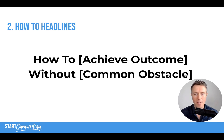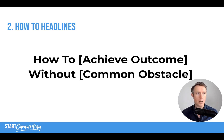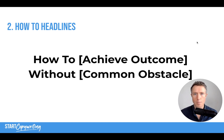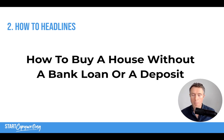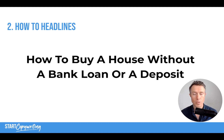How-to headlines are some of my favorite. The template is: 'How to achieve [outcome] without [common obstacle].' By obstacle I mean something the target audience believes to be true — something stopping them from doing what they want, or a common challenge they've experienced. Here's an example: 'How to buy a house without a bank loan or a deposit.' Most people believe you need a bank loan or a deposit to buy a house, and that might be stopping them. This headline says you can get what you want without those perceived obstacles.